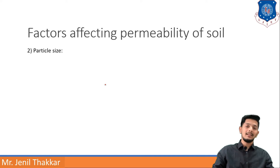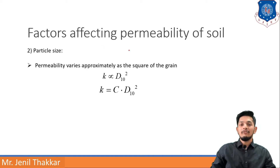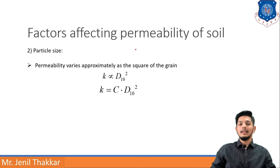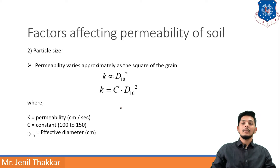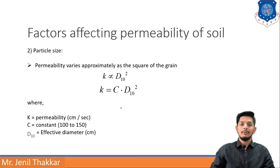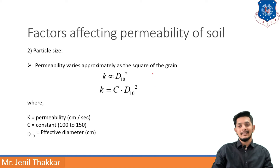The second factor affecting permeability is particle size. Permeability varies approximately as the square of the grain size, so k is proportional to D10². The formula is k = C × D10², where k is permeability in centimeter per second, C is a constant generally taken from 100 to 150 (standard value 125), and D10 is the effective diameter from particle size analysis.